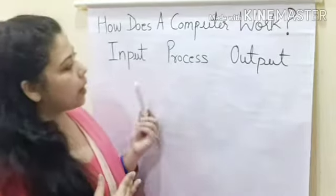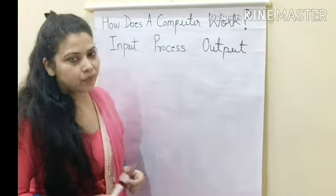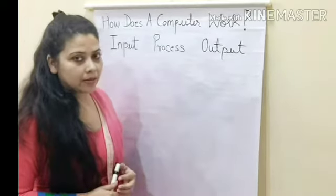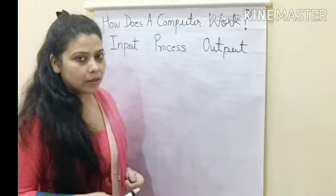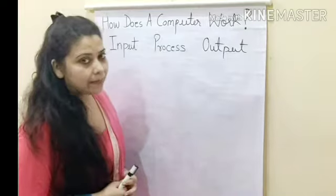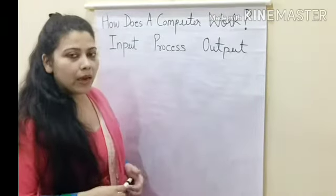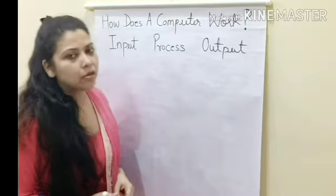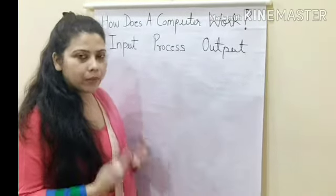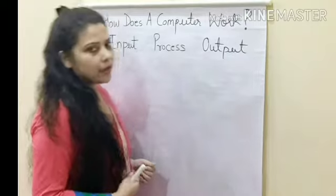It works in 3 basic steps: input, process, and output. I gave you examples — a broken pencil and sharpener, dirty clothes, our body parts where a teacher was asking a question, and also an example of making a mango shake. I gave you real life examples of input, process, and output. Today we are going to learn how a computer works through the IPO cycle.